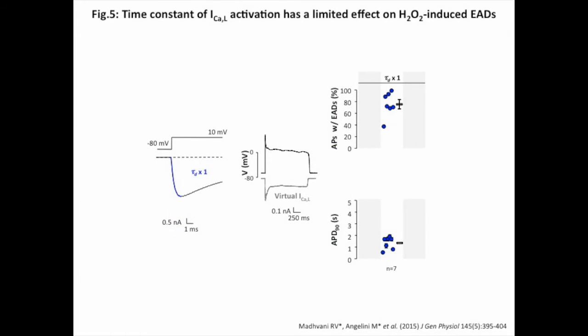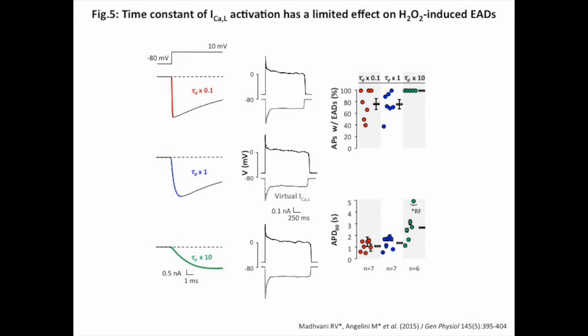We next studied the effects of altering the time constant of L-type calcium current activation on EAD formation during oxidative stress shown in Figure 5. Our results demonstrate that neither speeding up L-type calcium current activation by tenfold nor slowing it down by tenfold could restore the action potential morphology and duration to a normal range. Likewise, we conclude that the time constant of activation of the L-type calcium current has limited potential as a therapeutic target.